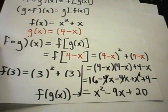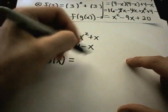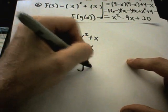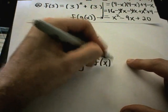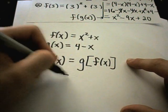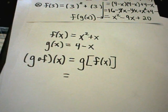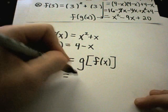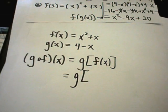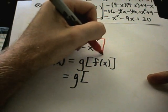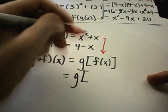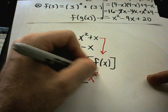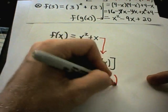Now let's see what we get when we do g of f of x. This notation says you plug f of x into your g function. Well, f of x is the function x squared plus x, so I'm going to plug in x squared plus x.